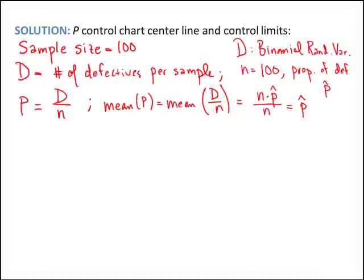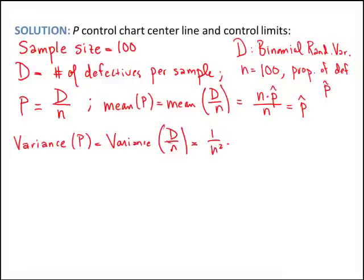For the upper and lower control limits, we need the standard deviation of P. The variance of P is the variance of D over n, and since n is a constant, this equals 1 over n-squared times the variance of D. Since D is binomial, its variance is n times p-hat times (1 minus p-hat). After canceling, the variance of P is p-hat times (1 minus p-hat) divided by n, and the standard deviation of P is the square root of that.